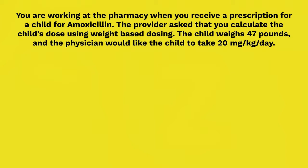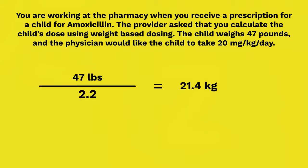Pause and see if you can figure out what is wrong with this prescription. The problem gives the weight in pounds; however, the equation requires kilograms. So before solving, we need to convert: 47 pounds divided by 2.2 equals 21.4 kilograms. This is an important step — always double-check that your units are correct. If the question gives you weight in pounds, convert to kilograms before solving to ensure the correct answer.